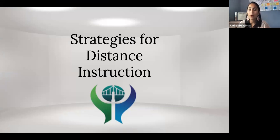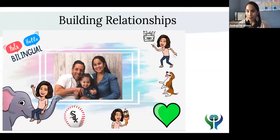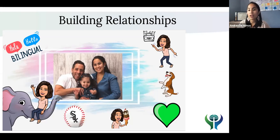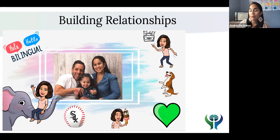What worked for me in the spring was having groups of four to five students. The very first thing you should always do — and this matches what you would do in person — is work on building relationships, because unless you build relationships you won't establish trust and connection with your students, especially for kinder students meeting you for the very first time. If you have flexibility, that first week set up one-on-one meetings with families to introduce yourself before jumping into rigorous instruction.